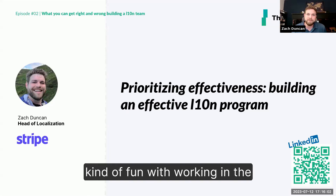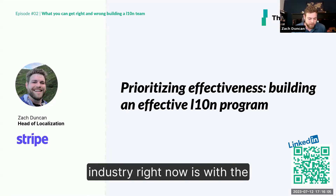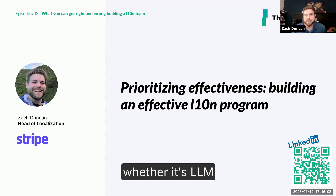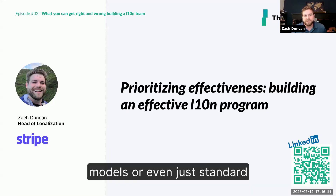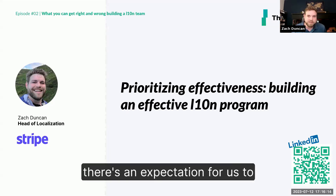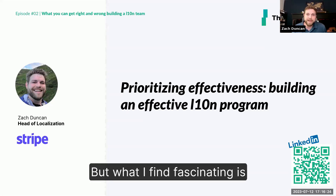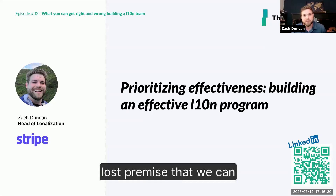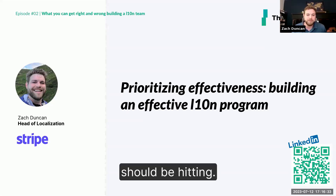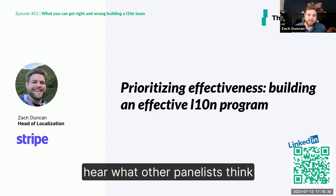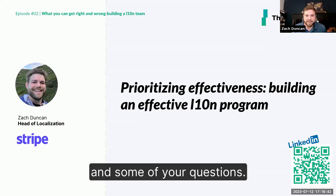One last point that's kind of fun about working in the industry right now: with the advancement of technology — whether it's LLM models or standard machine translation models — there's an expectation for us to become more and more efficient. That's putting a lot of pressure on people to scale up and meet those expectations. But what I find fascinating is we're now getting the tooling to beat those expectations. It's no longer a lost premise that we can do more for less — it's an expectation we should be hitting. I'm excited to share my thoughts and hear from the other panelists.